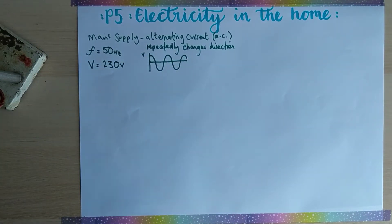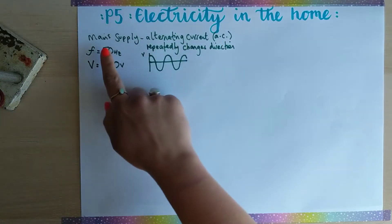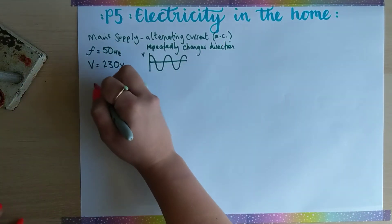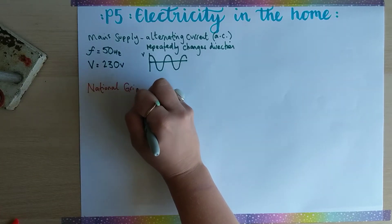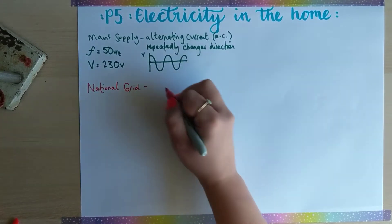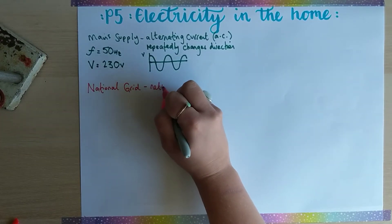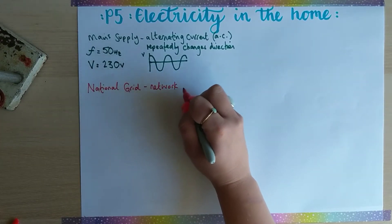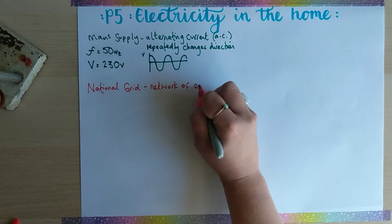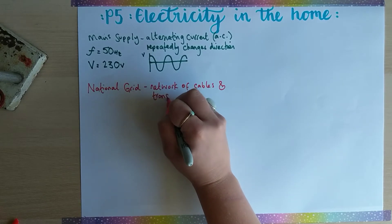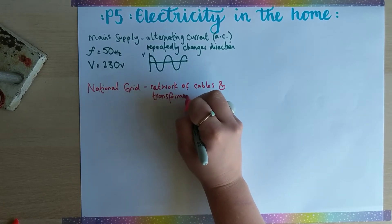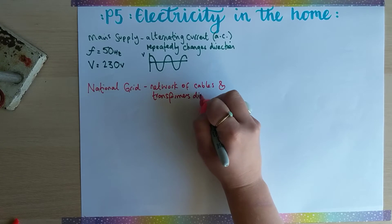In the UK, the mains supply is distributed by something called the national grid. You need to know that the national grid is a network, and the things that are in the network are cables and transformers that distribute electricity.